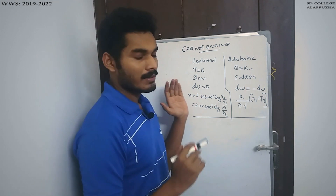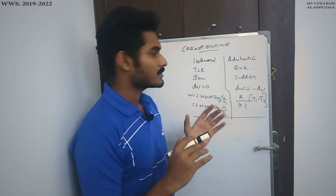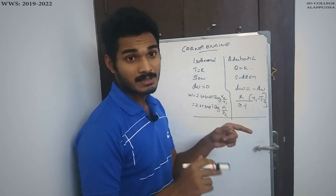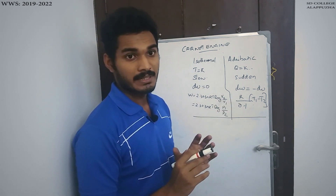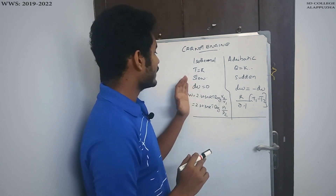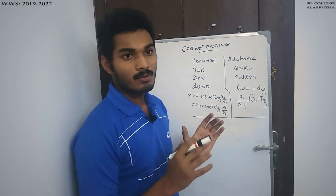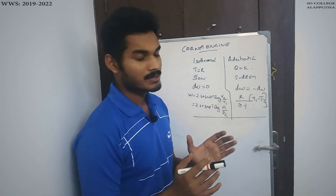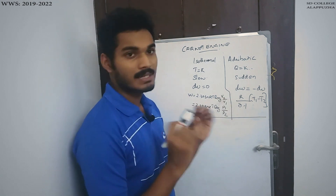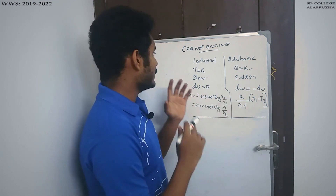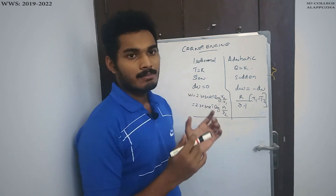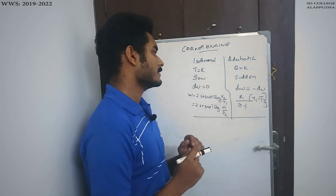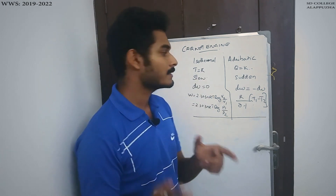In the isothermal process, the temperature is constant. In the adiabatic process, the heat is constant. In the isothermal process, it is a slow process. In the adiabatic process, it is a sudden process. In the isothermal process, dQ is equal to zero. In the adiabatic process, dW is equal to minus dU.